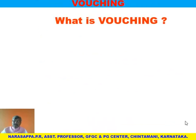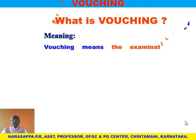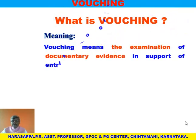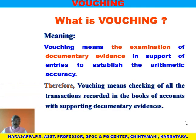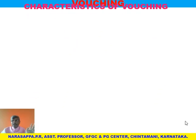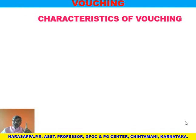Simply put, vouching means the examination of documentary evidences in support of entries to establish the arithmetic accuracy in the books of accounts. Or we can say: vouching means checking of all the transactions recorded in the books of accounts with supporting documentary evidences. Checking entries against evidences — this process is called vouching.